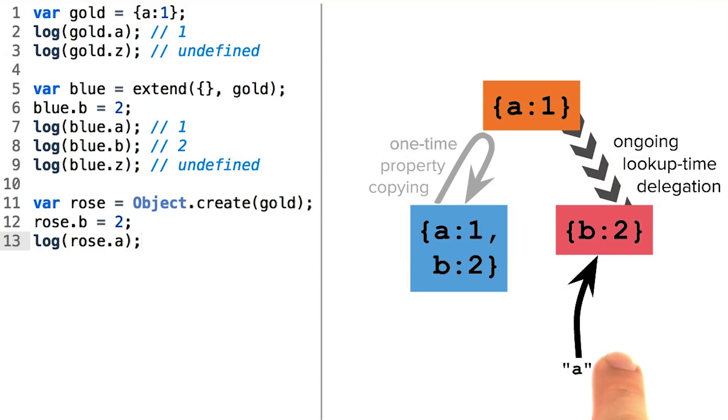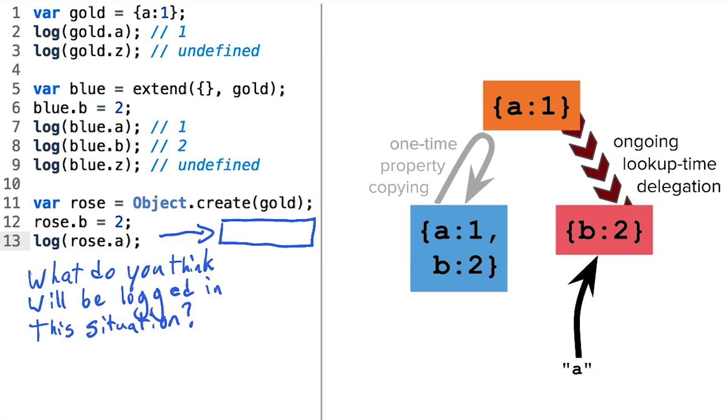But when you ask that object for a property that can't be found directly on the object itself, it does something rather interesting. The lookup falls through up the chain to the prototype object. So what do you think will get logged in this situation?